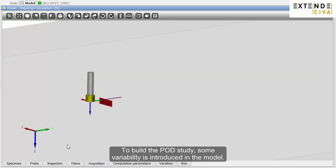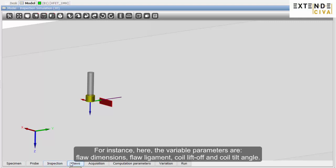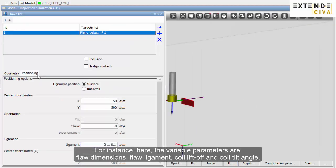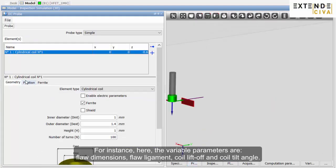To build the POD study, some variability is introduced in the model. For instance, here, the variable parameters are flaw dimensions, flaw ligament, coil liftoff, and coil tilt angle.